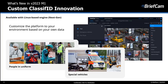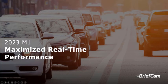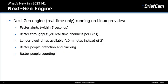You can take advantage of this new innovation when you install BriefCam's next-gen engine for real-time processing. This brings me to our second impact: maximized real-time performance. This new engine runs on Linux and uses industry standards. When you adopt this new infrastructure, you'll get faster alert times — all alerts will arrive within five seconds. You'll get two times the throughput for real-time channels compared to the classic engine, which significantly reduces the total cost of ownership through a reduction in hardware.